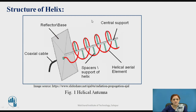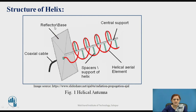This is the structure of a helix antenna or helical antenna. The helical antenna has the shape of a helix with a number of turns, and spacers are provided between each turn. The helical aerial element is used to make the number of turns. The central support is provided at the center, also called the axis of the helix, and the base is at the left side, also called the reflector or ground plate with the feeding line. A coaxial cable is used: the inner conductor is connected to the helix whereas the outer conductor is connected to the ground plane.